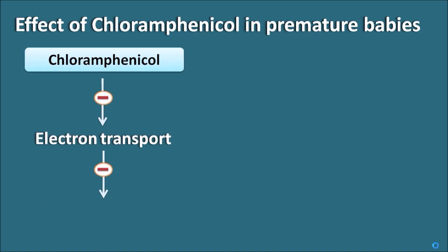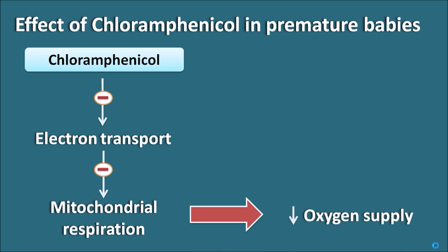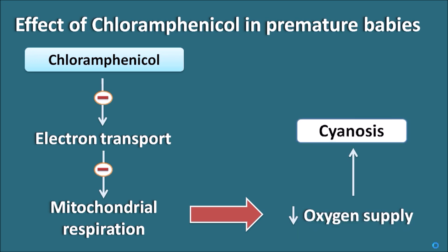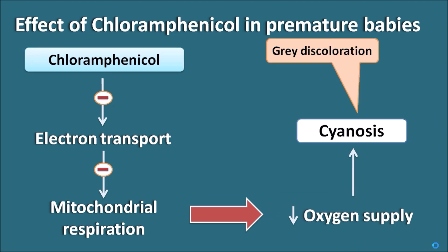The effect of raised chloramphenicol levels in premature babies is that chloramphenicol can inhibit the electron transport chain, thereby inhibiting mitochondrial respiration. When mitochondrial respiration is inhibited, it reduces oxygen supply, leading to cyanosis — a blue discoloration due to lack of oxygen. This cyanosis may cause gray discoloration of the skin, which is why it is called gray baby syndrome. Additionally, cyanosis can lead to reduced body temperature and cardiac irregularities.